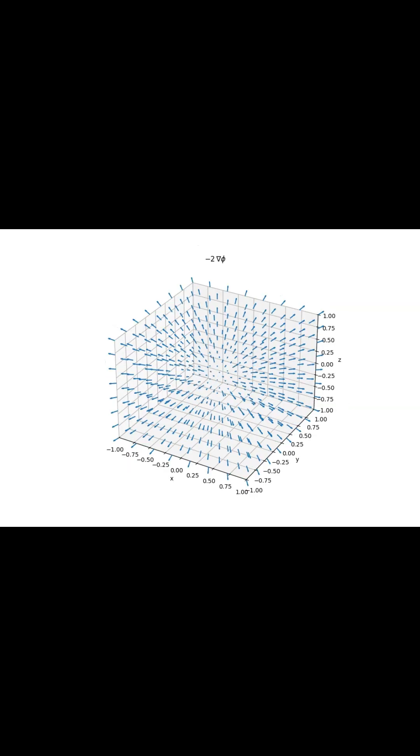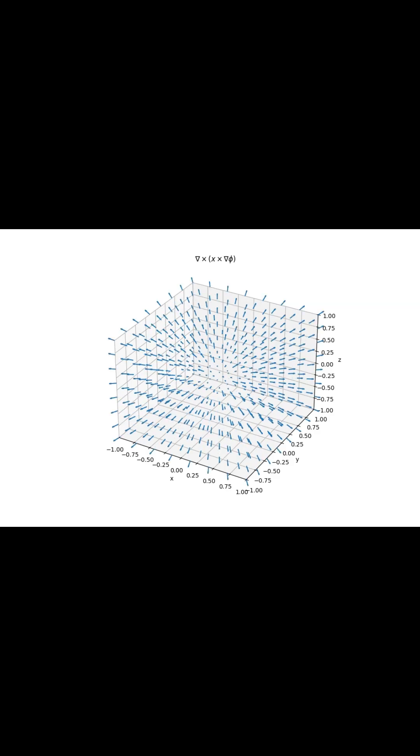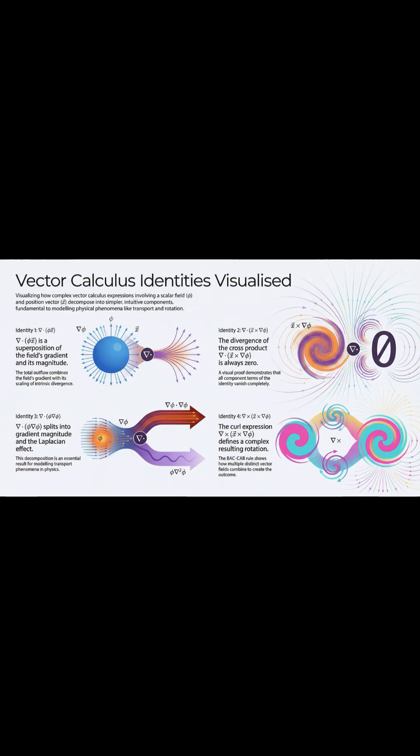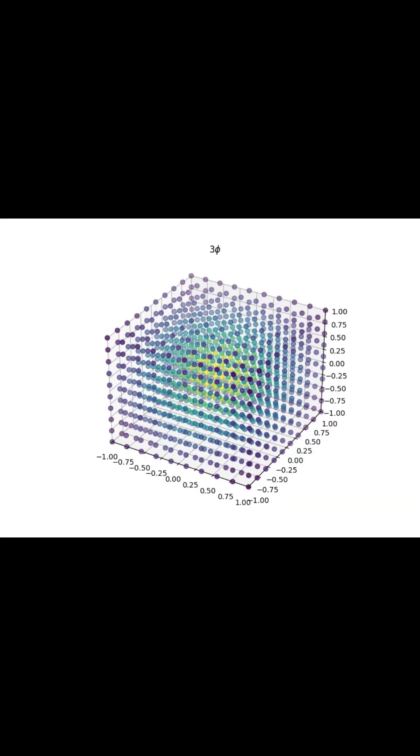Second, we've got vanishing terms and transport phenomena. You get this fantastic visual proof showing that the cross-product divergence is identically zero. Both component terms just vanish. Plus, another identity, one that's fundamental for modeling transport, decomposes into the squared gradient magnitude and a product with the Laplacian, which is absolutely essential for modeling diffusion.